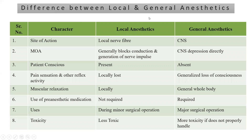There are certain differences between local and general anesthetics. The patient is conscious during local anesthesia, whereas in general anesthesia the patient is unconscious. Local anesthetics are applied locally to a restricted area, while general anesthesia affects the whole body. In local anesthesia there is loss of sensation, whereas in general anesthesia there is loss of consciousness. Compared to general anesthetics, local anesthetics are less toxic.